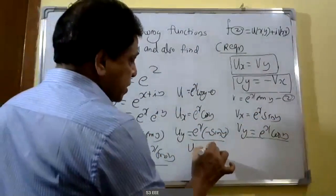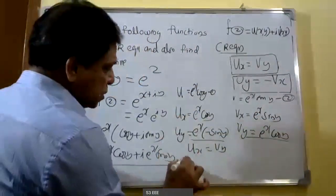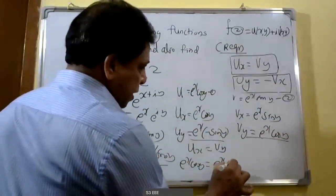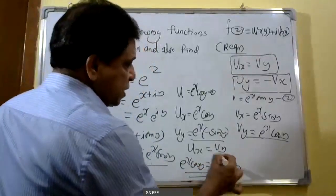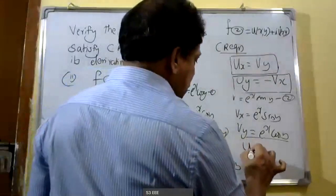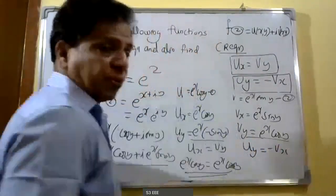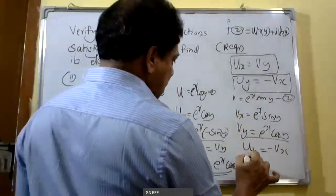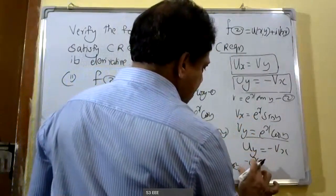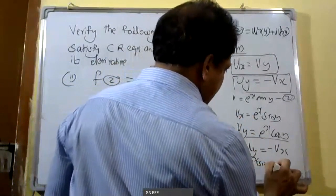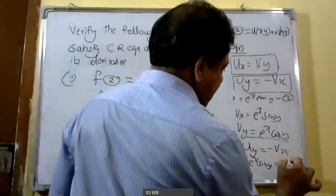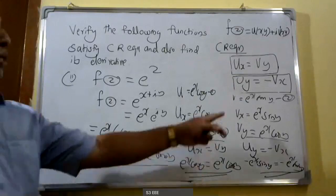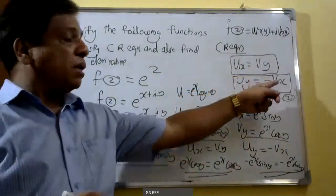The Cauchy-Riemann condition u_x equals v_y: here u_x equals e raised to x cos y, and v_y equals e raised to x cos y. Therefore the first equation is satisfied. Then the second equation u_y equals minus v_x: u_y equals minus e raised to x sine y, and minus v_x equals minus e raised to x sine y. Therefore both Cauchy-Riemann equations are satisfied, that is u_x equals v_y and u_y equals minus v_x.